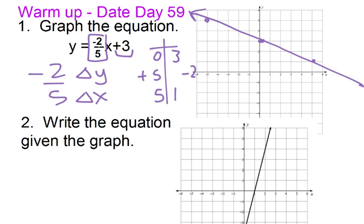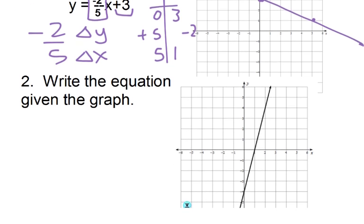Now for number 2, same idea. Find our starting point, which is right here at negative 4. Remember slope-intercept form, that's the b, so my b equals negative 4.